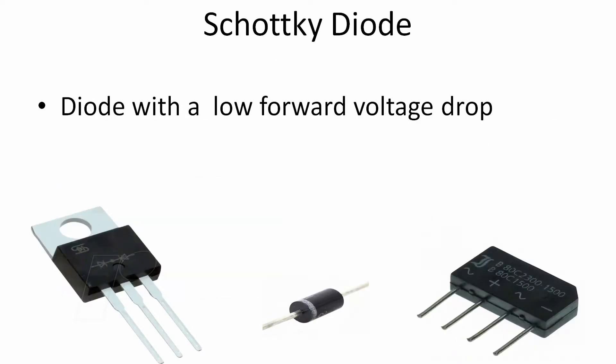A Schottky diode is like a power diode. It has low forward voltage drop and is usually used for converting AC into DC voltage through rectifier diodes.